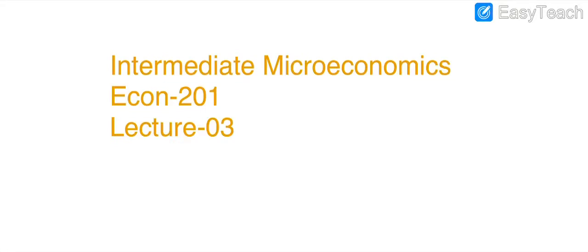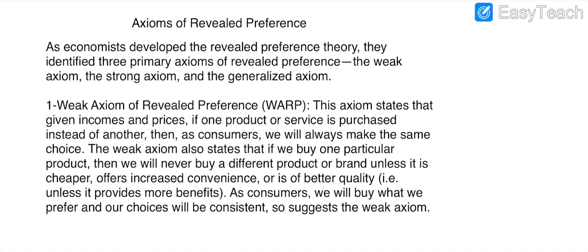We are going to start Intermediate Microeconomics Lecture 3. In lectures one and two we were discussing Revealed Preference Theory. In the remaining portion we cover its three main axioms: the first is the Weak Axiom, the second is the Strong Axiom, and the third is the Generalized Axiom.